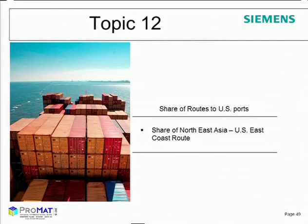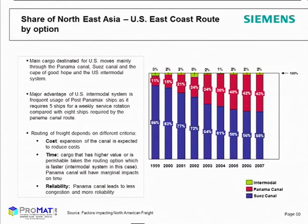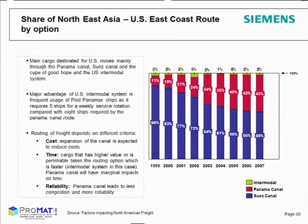Main cargo destined for the US moves mainly through the Suez Canal and Panama Canal, with a small share through the intermodal system. An advantage of the US intermodal system is that it needs five ships for weekly service compared to eight ships via the Panama Canal route. Routing decisions depend on costs, time, and reliability. Perishable and high-value goods take the faster routing option — the intermodal system. The expectation is that the Panama Canal expansion will lead to more reliability and less congestion.